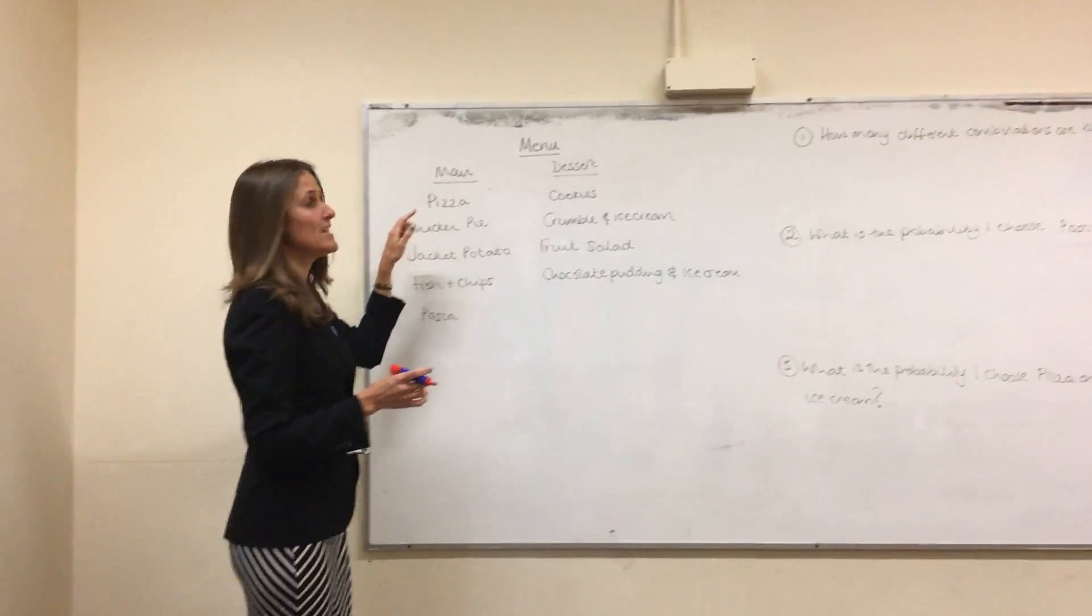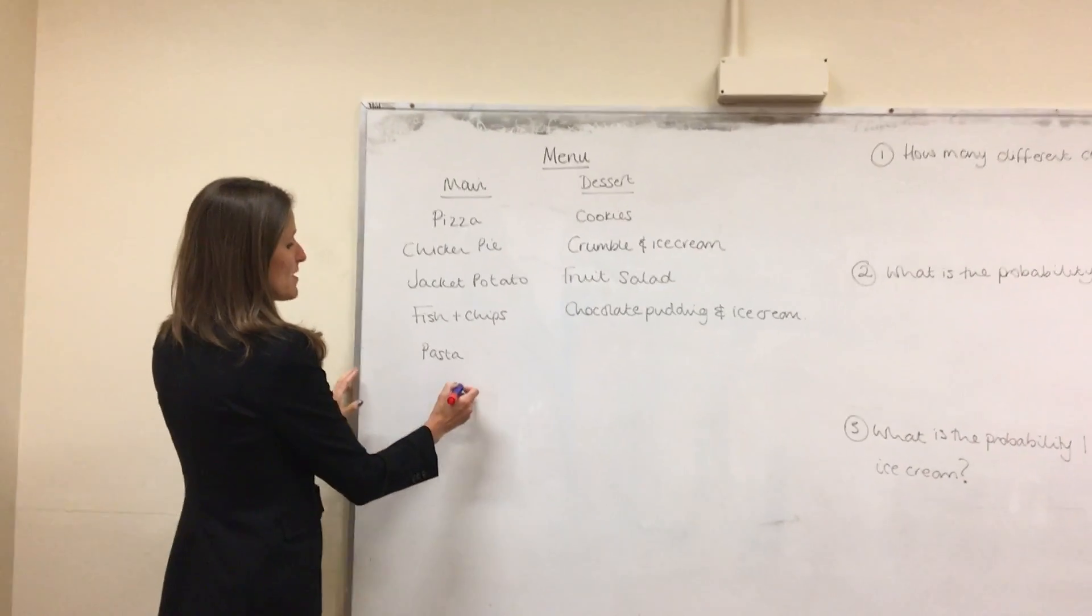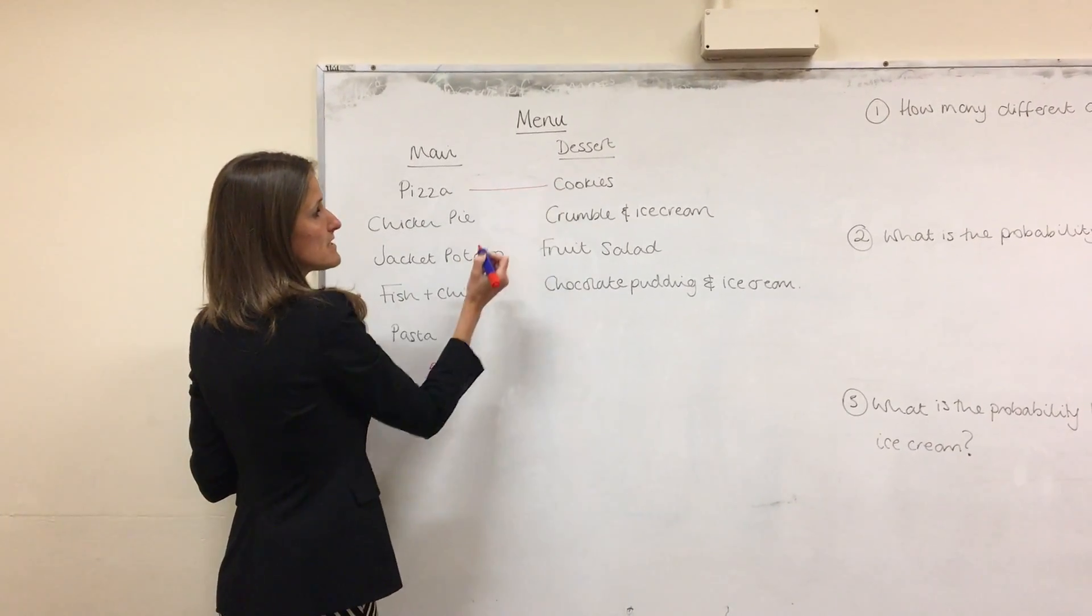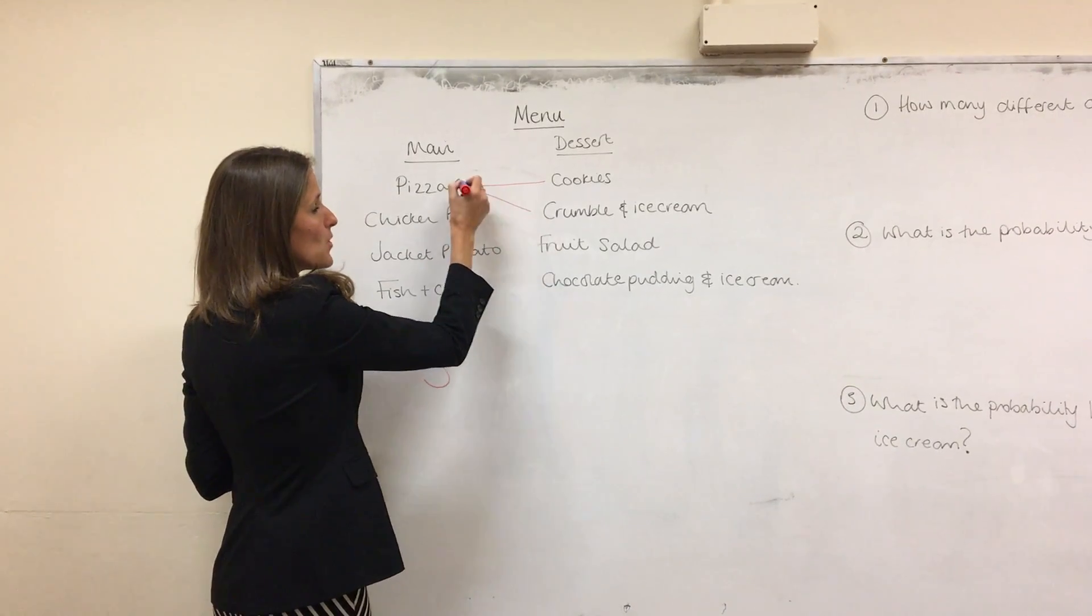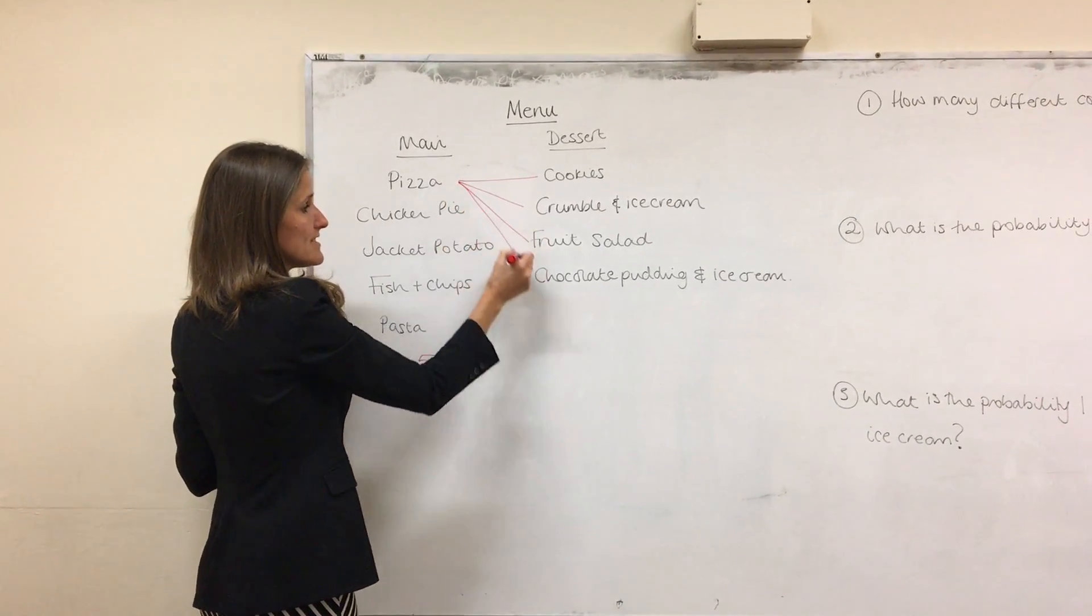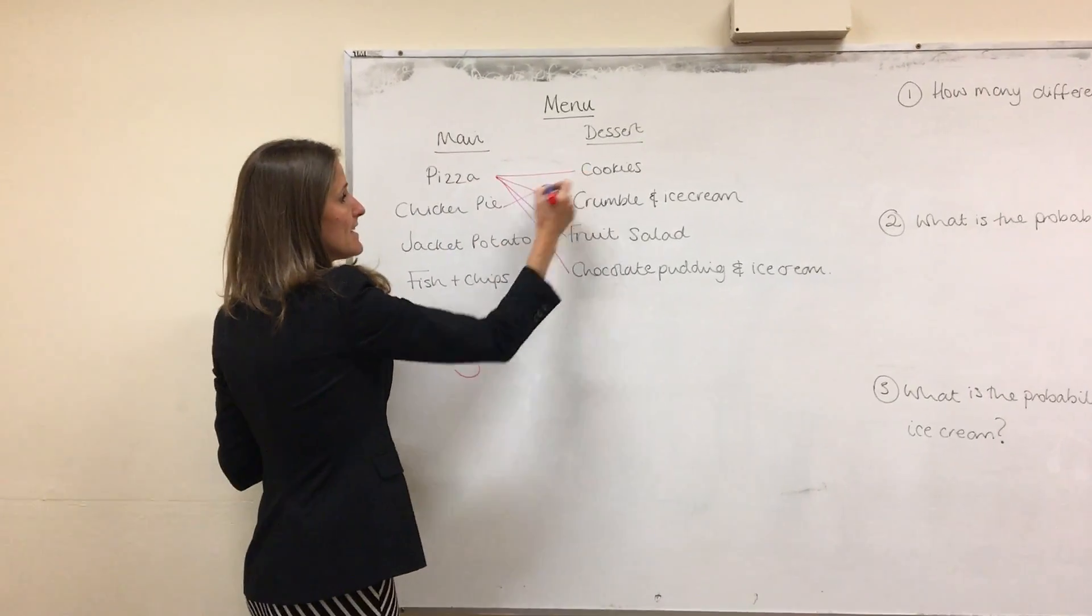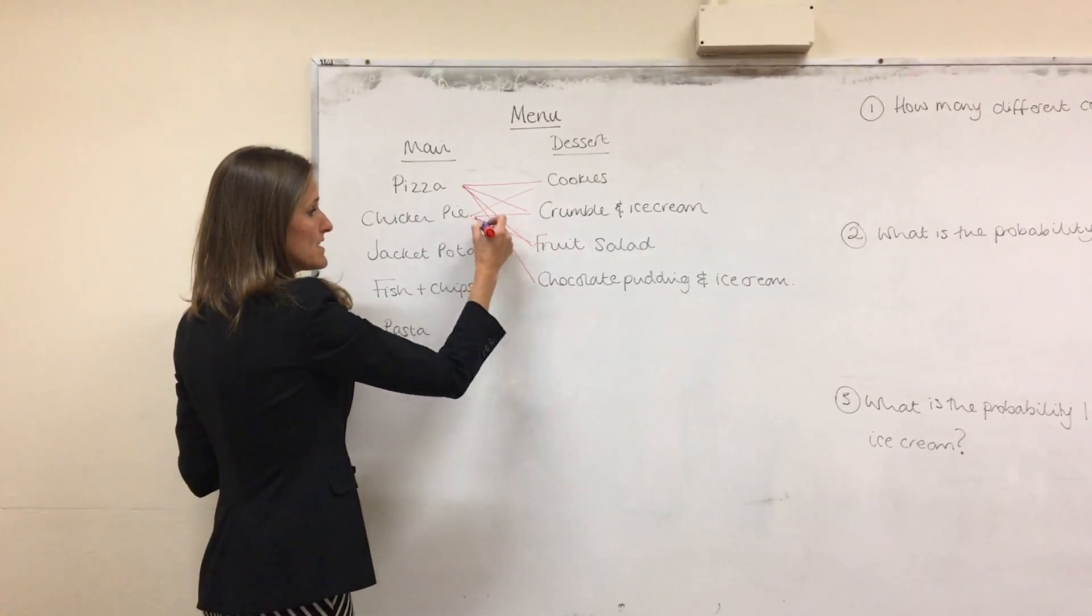If we look at our main menu, as I said before, we've got five different options for our main course. But for each of those options you can choose all of the four different desserts. So for the pizza you can choose all those four. For the chicken pie you can also choose all of these four.